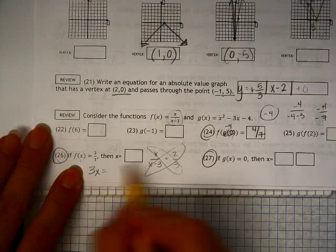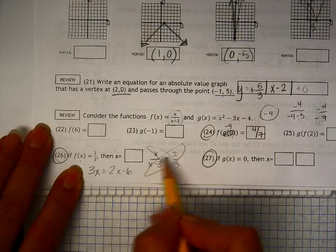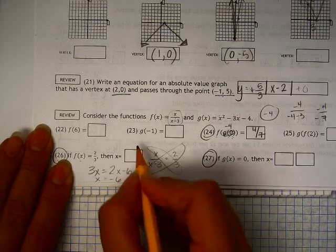I get 3x equals, make sure you distribute, 2x minus 6. 2 times that and 2 times that. Move the 2 over and x equals negative 6.